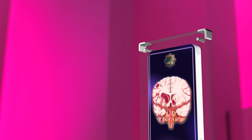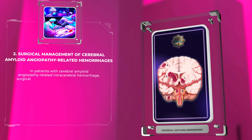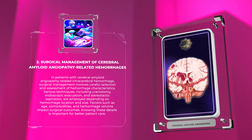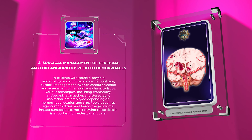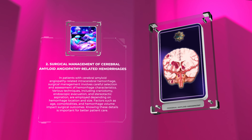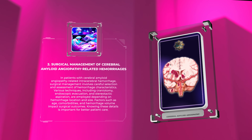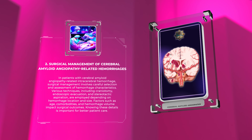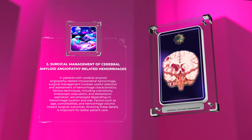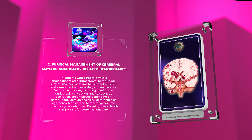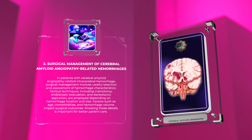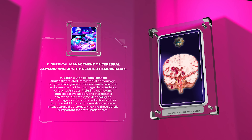In patients with cerebral amyloid angiopathy-related intracerebral hemorrhage, surgical management involves careful selection and assessment of hemorrhage characteristics. Various techniques, including craniotomy, endoscopic evacuation, and stereotactic aspiration, are employed depending on hemorrhage location and size. Factors such as age, comorbidities, and hemorrhage volume impact surgical outcomes. Knowing these details is important for better patient care.